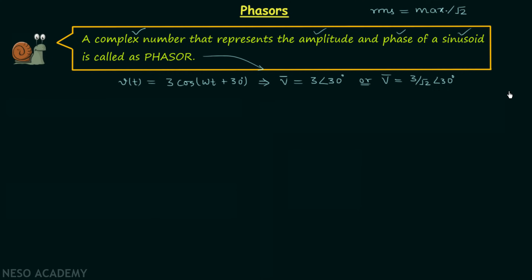When we convert sinusoids to phasors, it is more convenient to work with phasors than with sine or cosine functions. Phasors provide a simple means of analyzing linear circuits excited by sinusoidal sources, and the notion of solving AC circuits using phasors was first introduced by Charles Steinmetz in 1893.